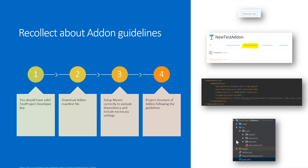To recollect what we did in our previous video: we downloaded all the dependencies like the Test Project SDK jar file, and we also downloaded the manifest file from the add-on we created. In this video we have to set up Maven correctly to exclude the dependency and include the necessary settings.